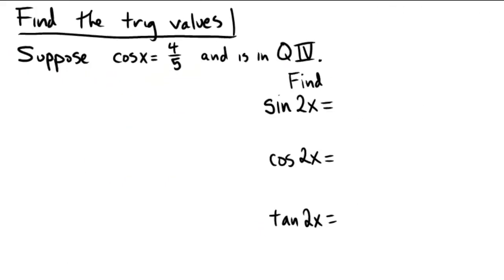Let's suppose that cosine of x equals 4 over 5 and is located in quadrant 4. We're going to use that fact to find sine 2x, cosine 2x, and tangent of 2x.